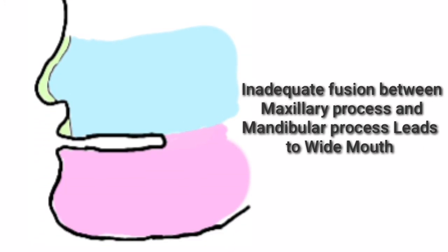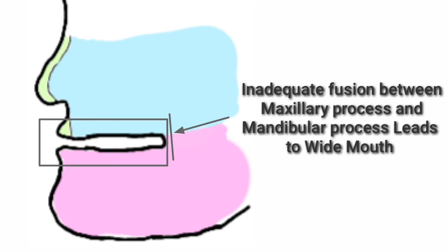Inadequate fusion between the maxillary process and mandibular process leads to a wide mouth, because fusion stops early — this leads to macrostomia.